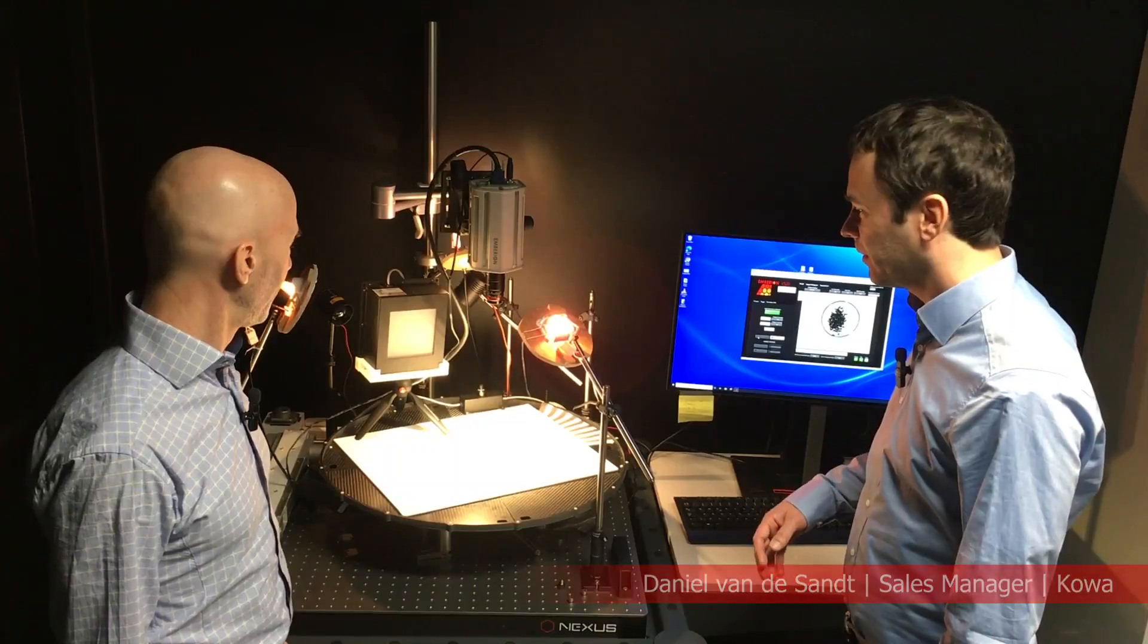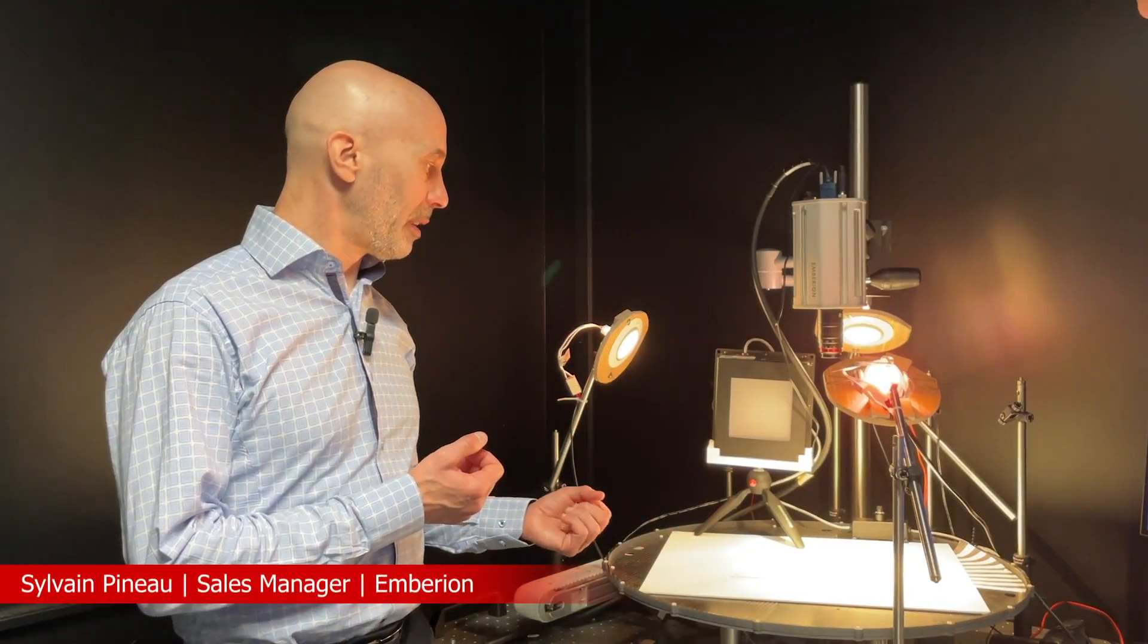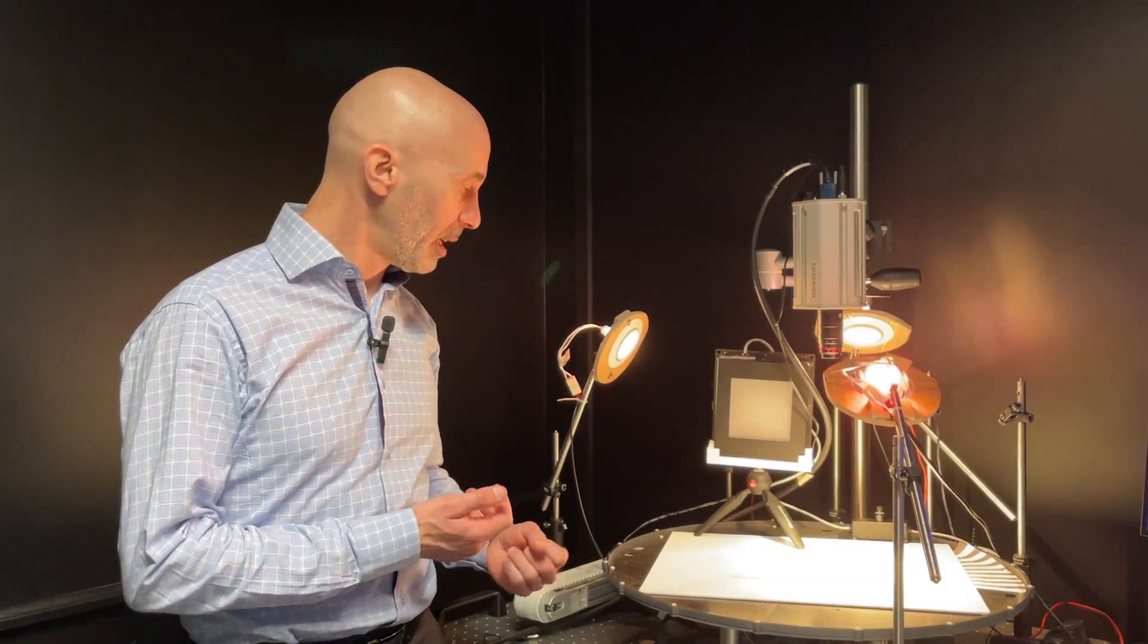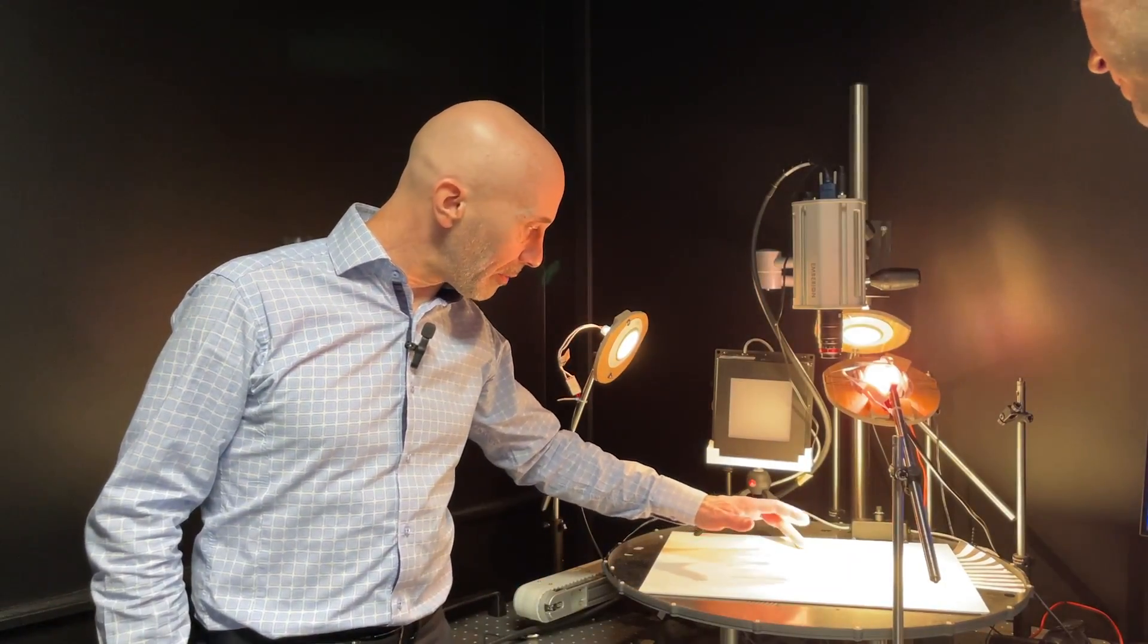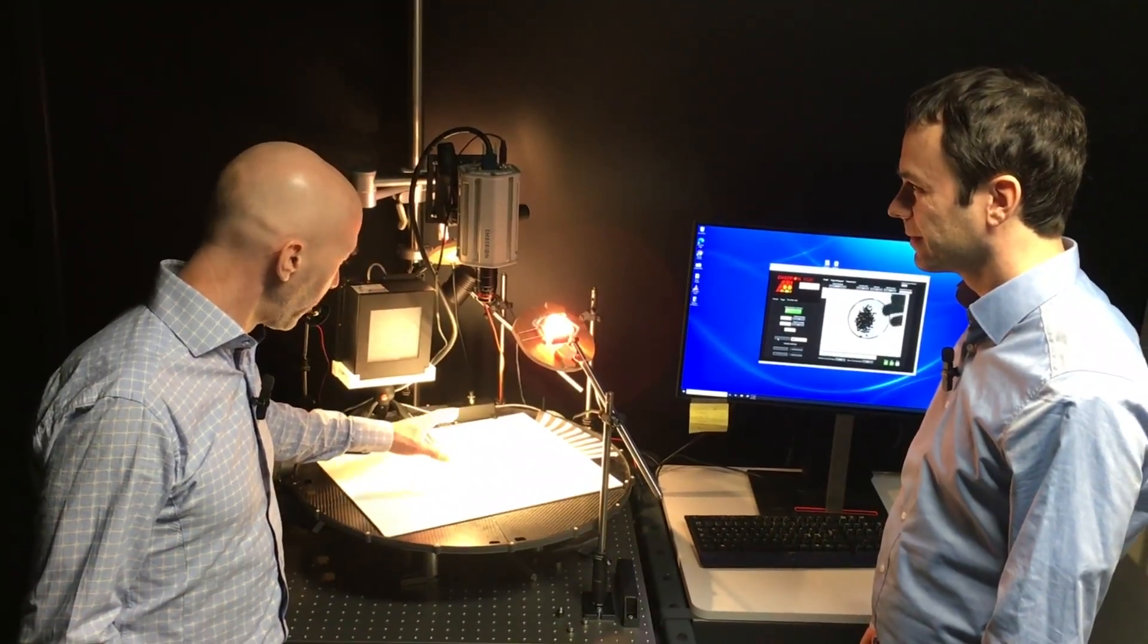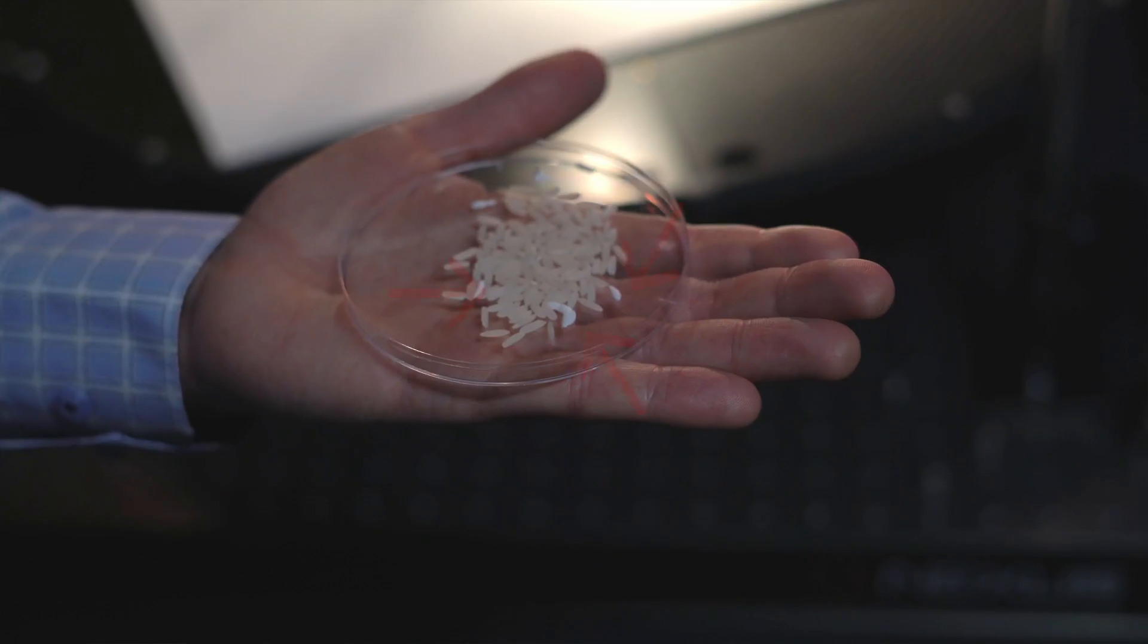What application are we looking at here and what are its challenges? What we're looking at is an application in the domain of food inspection, specifically rice sorting. In this cup, we have mixed some grains of jasmine rice with foreign material—in this case, pieces of white plastic of similar shape, size, and color.